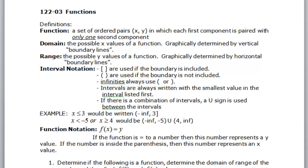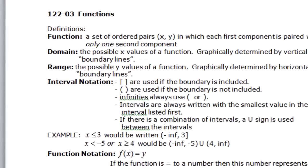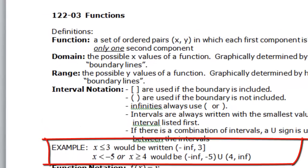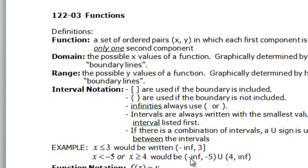Down here where it shows you the example, I just want to show you that when we're in WebWork, they like to use infinity as INF, so I wrote it that way for you. So you have negative infinity to negative five, and you have four to infinity — that's what all that means.